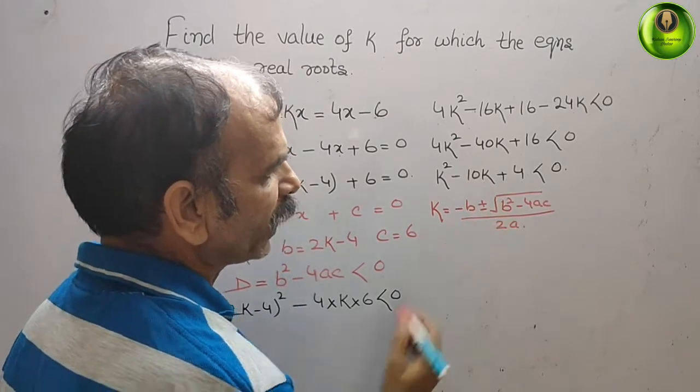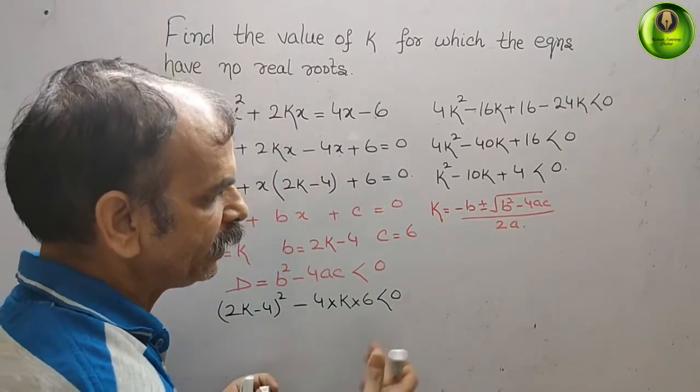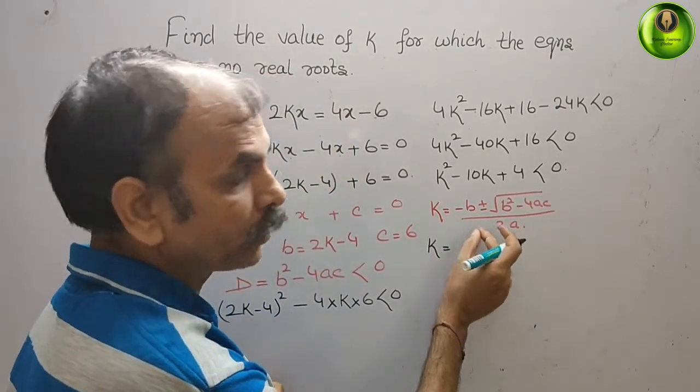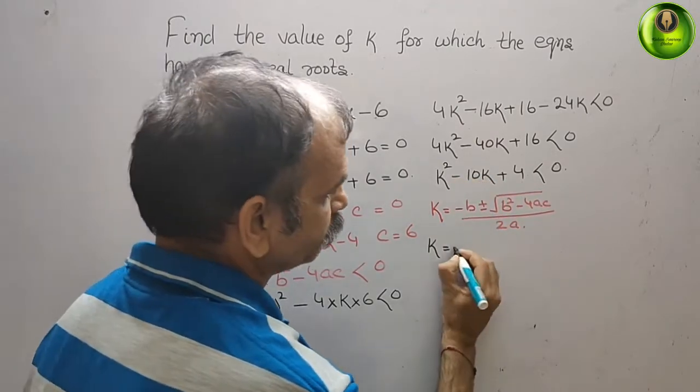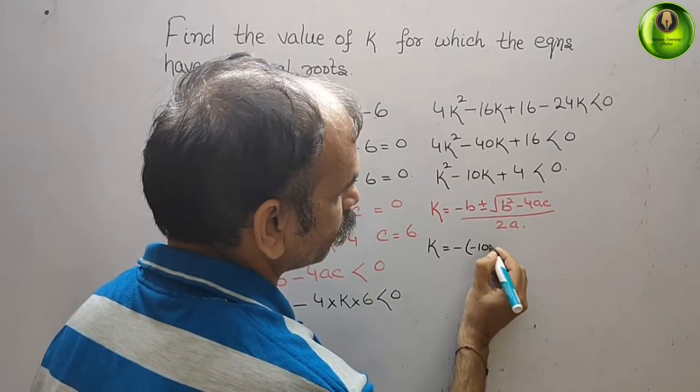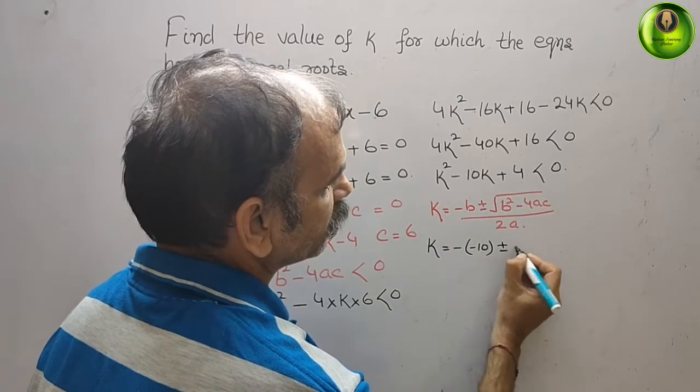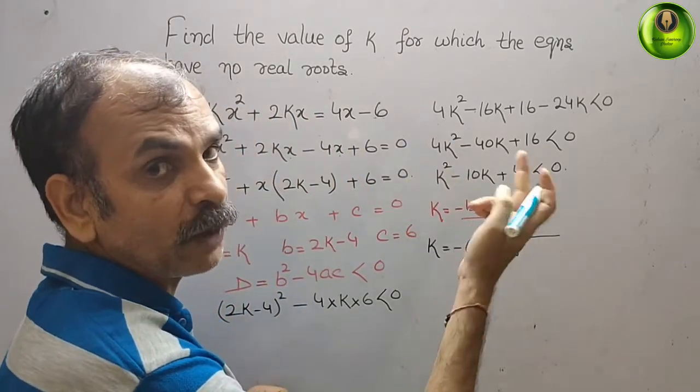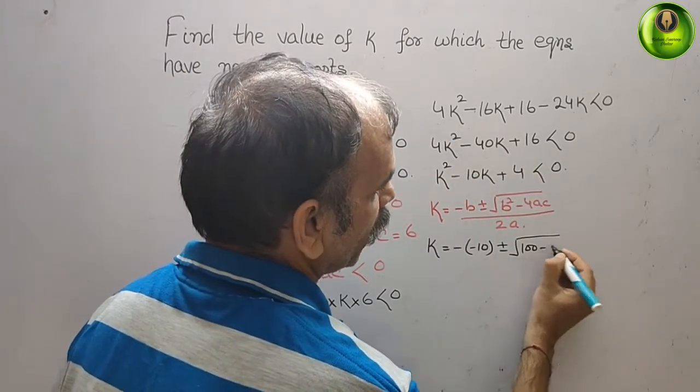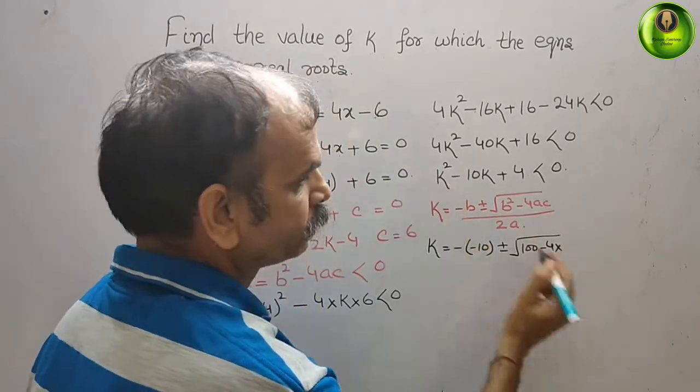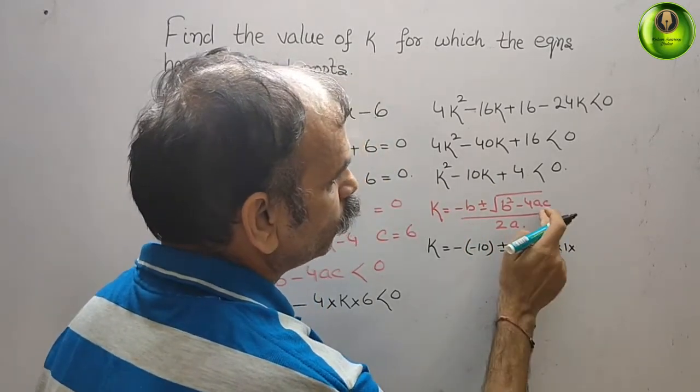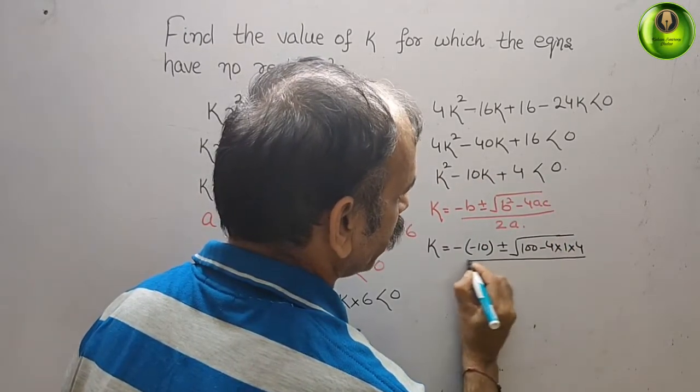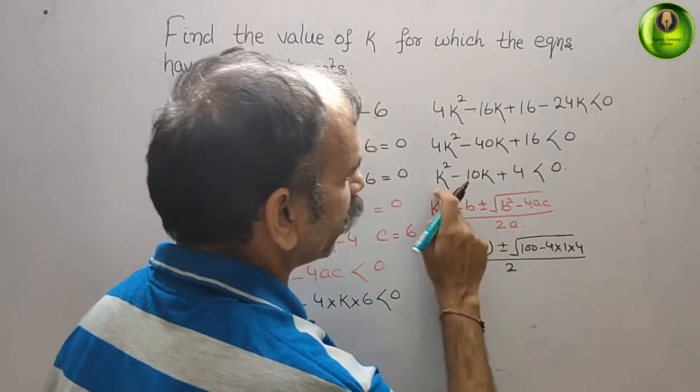Here what you will get? k is nothing but -b, minus of minus 10, plus minus root under b² - 4ac. That means (-10)² is 100 minus 4 times a is 1 times c is 4, by 2a, by 2 times 1.